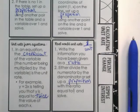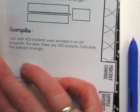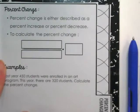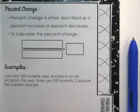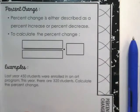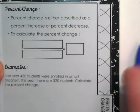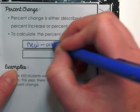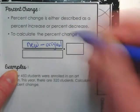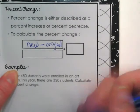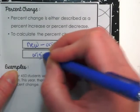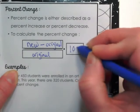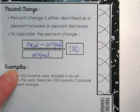We're going to do the next tab as well - percent change. This is closely related to what we're doing in Agile Mind now. Percent change is either described as a percent increase or a percent decrease. To calculate the percent change, you subtract new minus original and divide it by the original, and you multiply that times 100. Why 100? Because we're trying to find a percent.